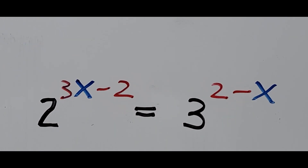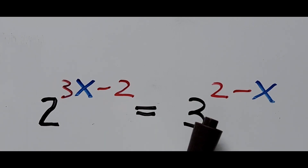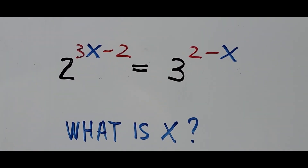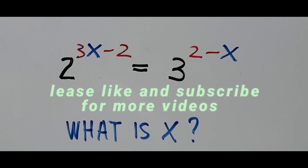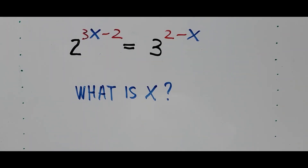Welcome to Cassiano Easy Math. This video is about solving an exponential equation: 2 raised to 3x minus 2 equals 3 raised to 2 minus x, and we're going to find the value of x. For those new to my channel, please hit the like button and subscribe for more videos. Let's start solving the exponential equation.